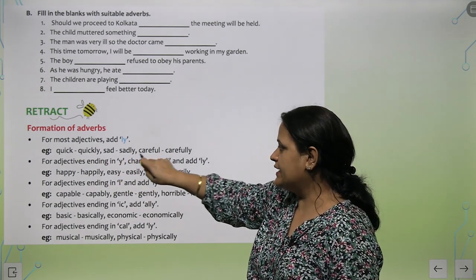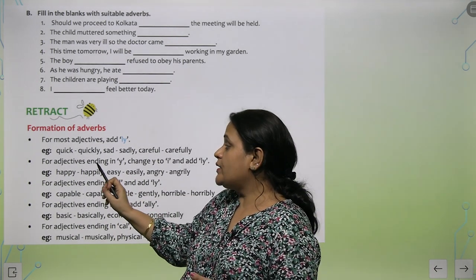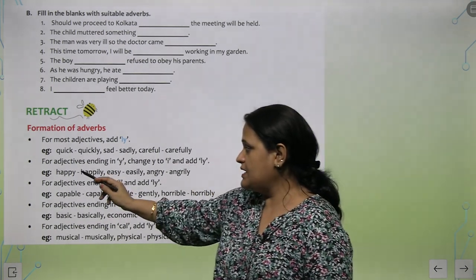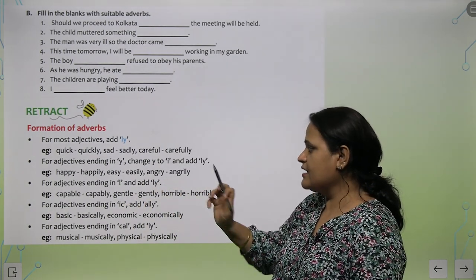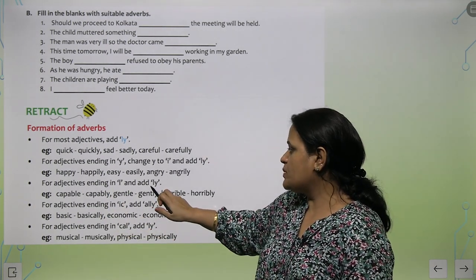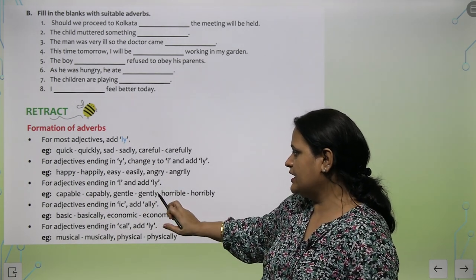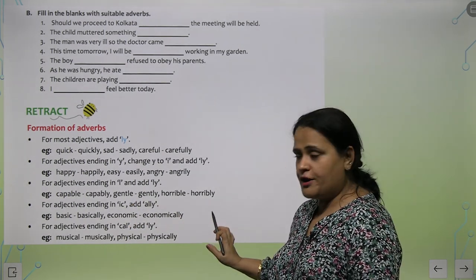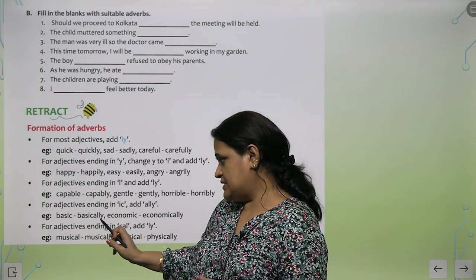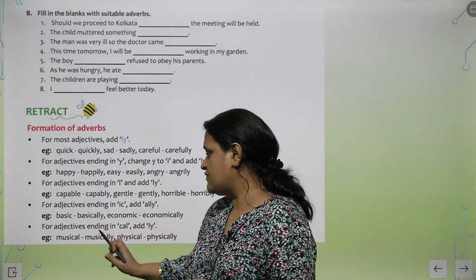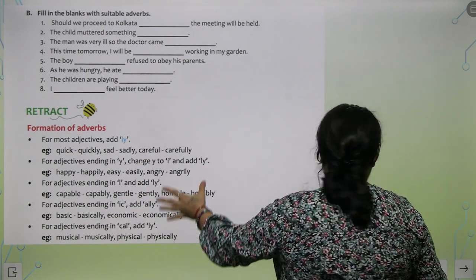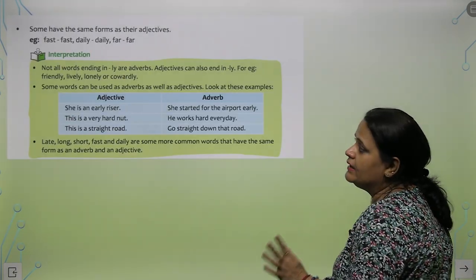Formation of adverbs. For most adjectives we add -ly, like quick becomes quickly, sad becomes sadly, careful becomes carefully. For adjectives ending in -y, change y to i and add -ly. Happy becomes happily, easy becomes easily, angry becomes angrily. For adjectives ending in -l, add -ly: gentle becomes gently, capable becomes capably, horrible becomes horribly. For adjectives ending in i-c, add a-l-l-y: basic becomes basically, economic becomes economically. For adjectives ending in c-a-l, add -ly: musical becomes musically, physical becomes physically.